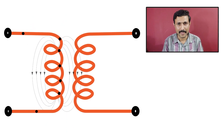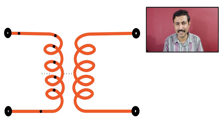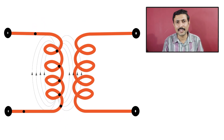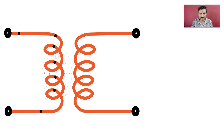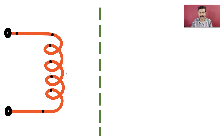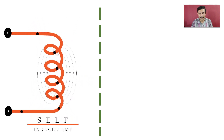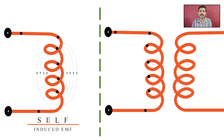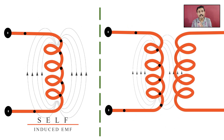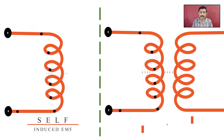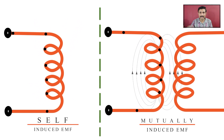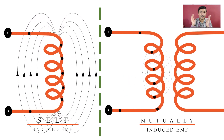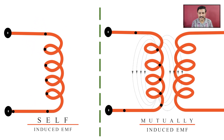There are two ways EMF can be induced: dynamically and statically. Since there are no moving parts in a transformer, the EMF induced is called statically induced EMF. Within statically induced EMF, there are two types: when current flows through a coil and the changing magnetic field induces EMF in that same coil, that is self-induced EMF. Whereas if the changing magnetic field of one coil induces EMF in a second coil, that is mutually induced EMF.